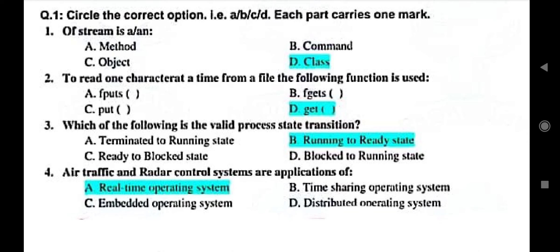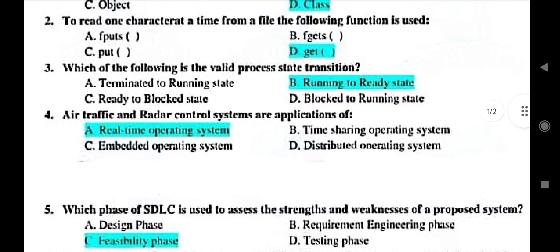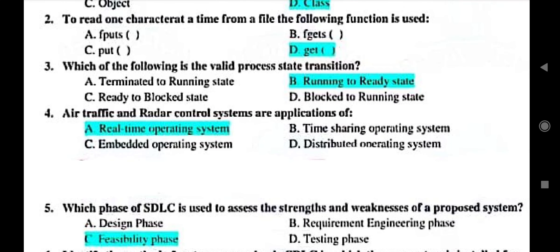Then which of the following is a valid process state transition. So that is option B running to ready state. Then air traffic and radar control systems are applications of. So that is real time operating system.